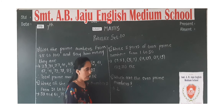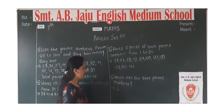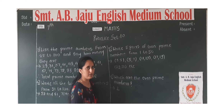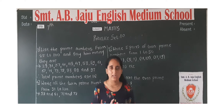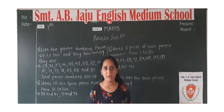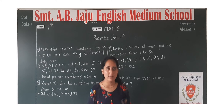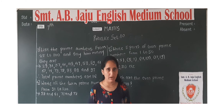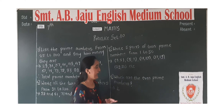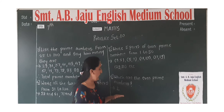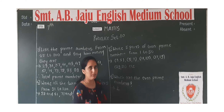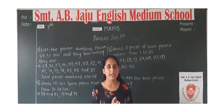Now, which are the even prime numbers? An even prime number is the number divisible by 1 and itself, and also even. We can divide 2 evenly — 2 is the only even prime number. So 2 is the even prime number.